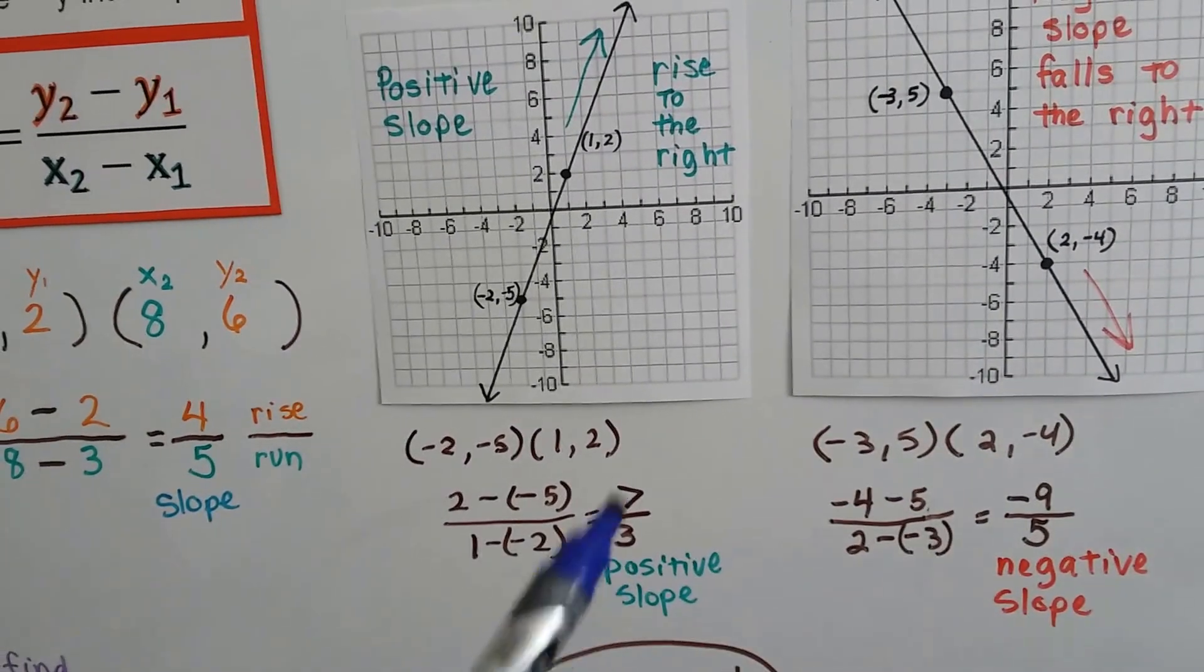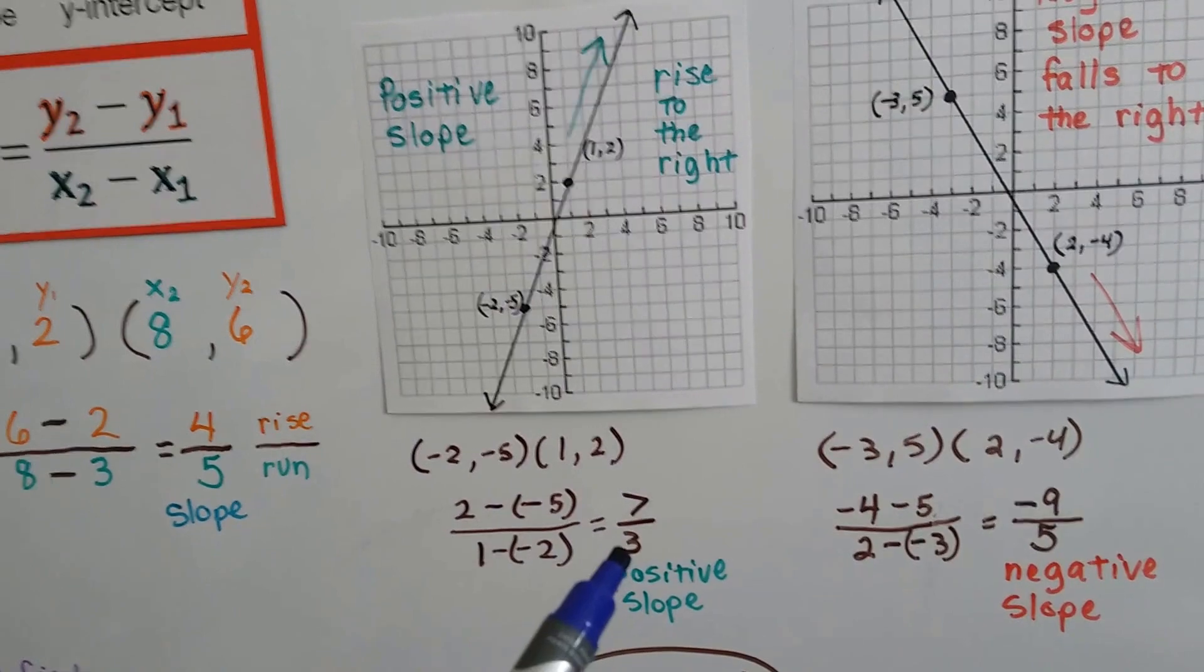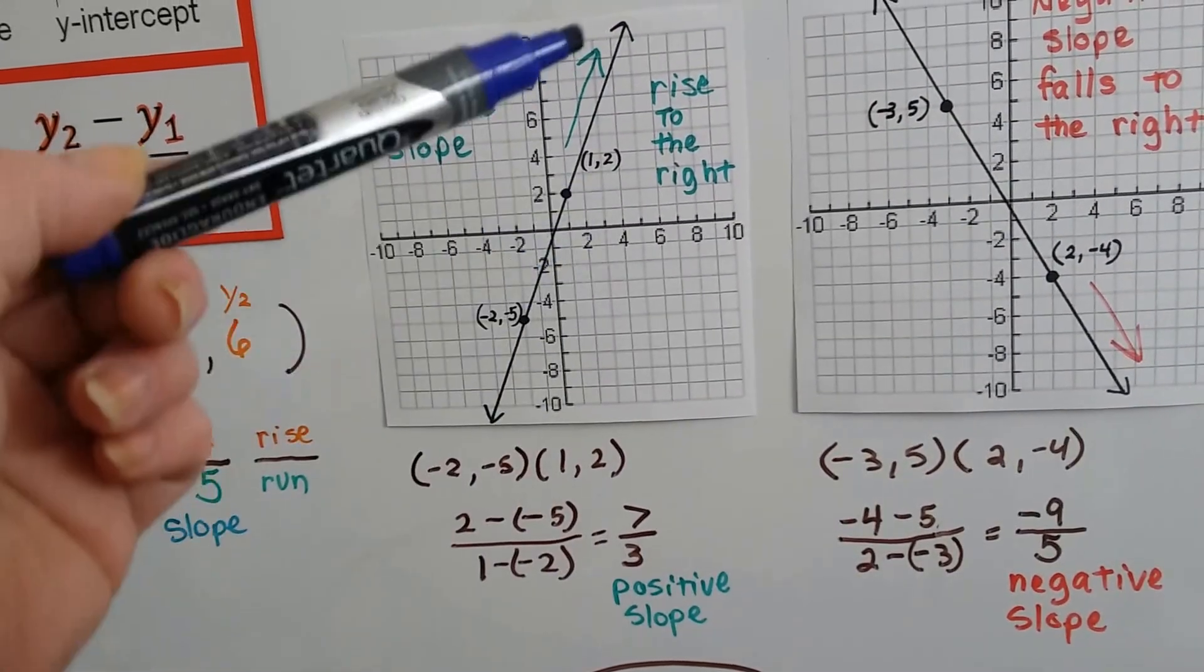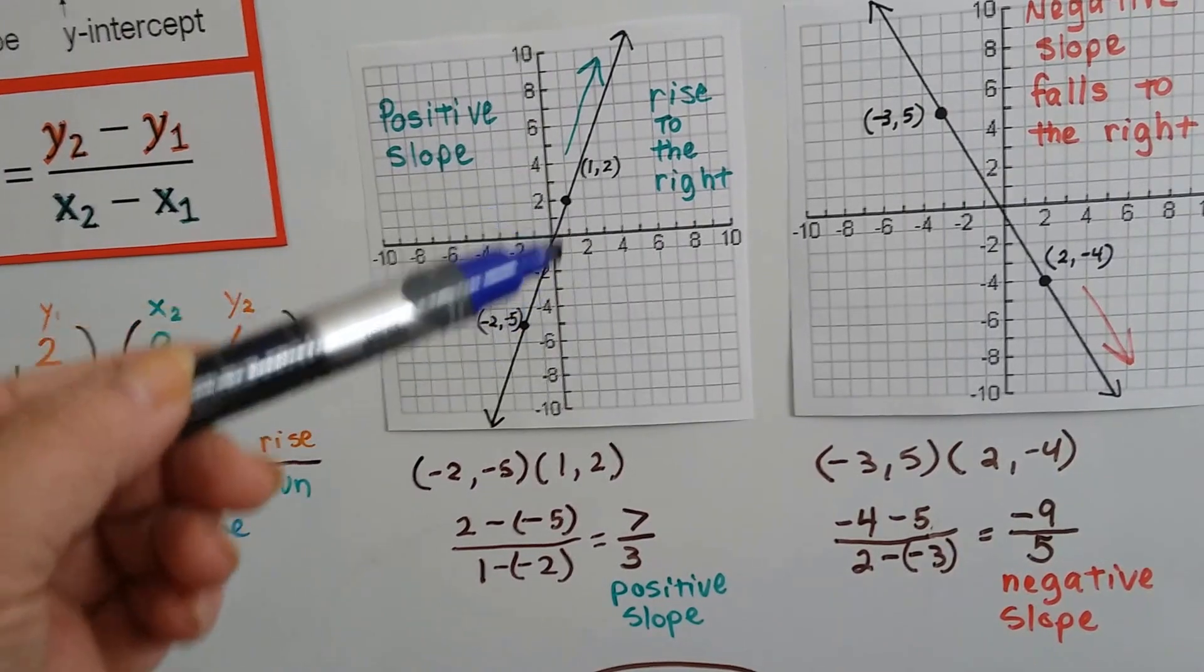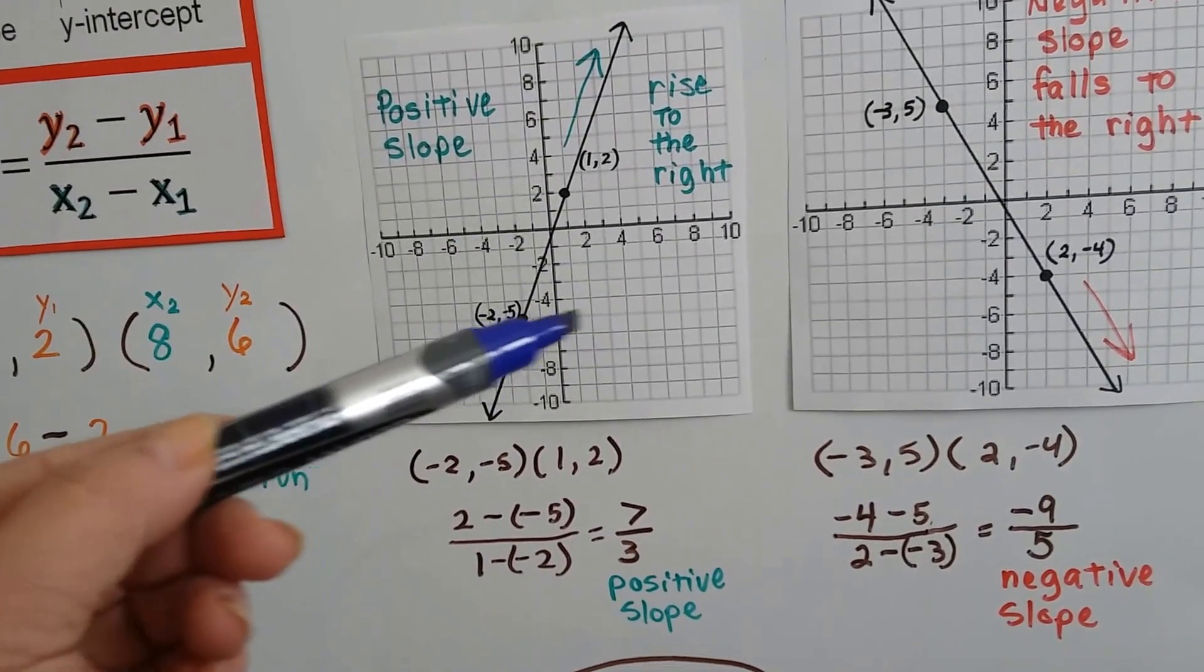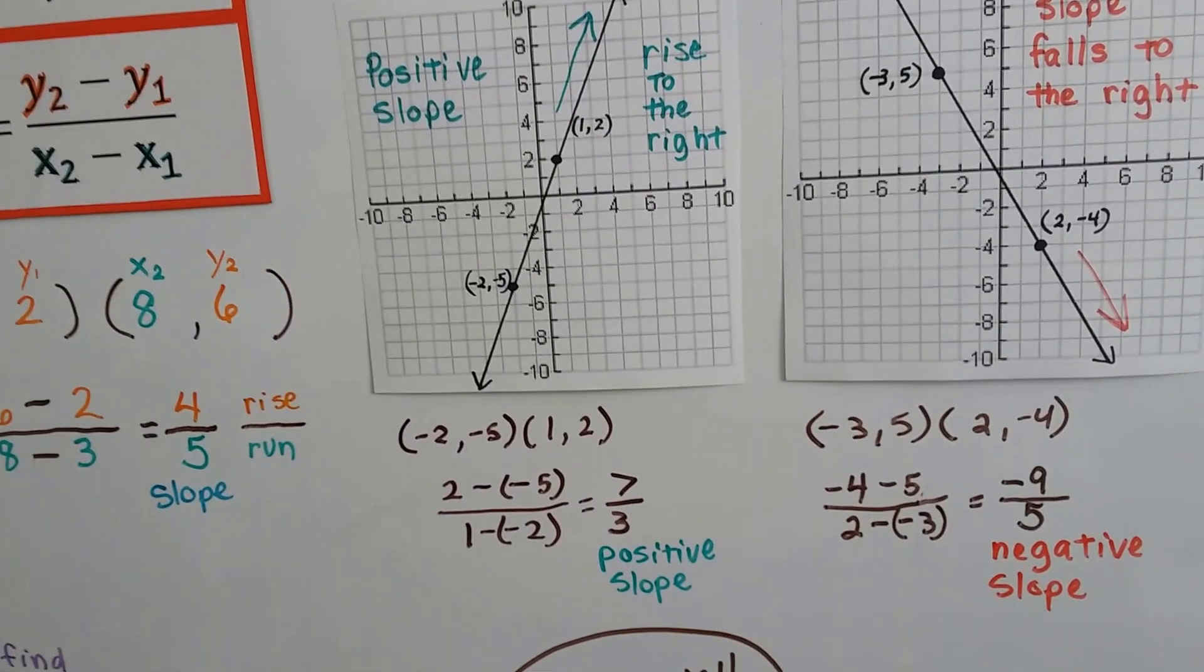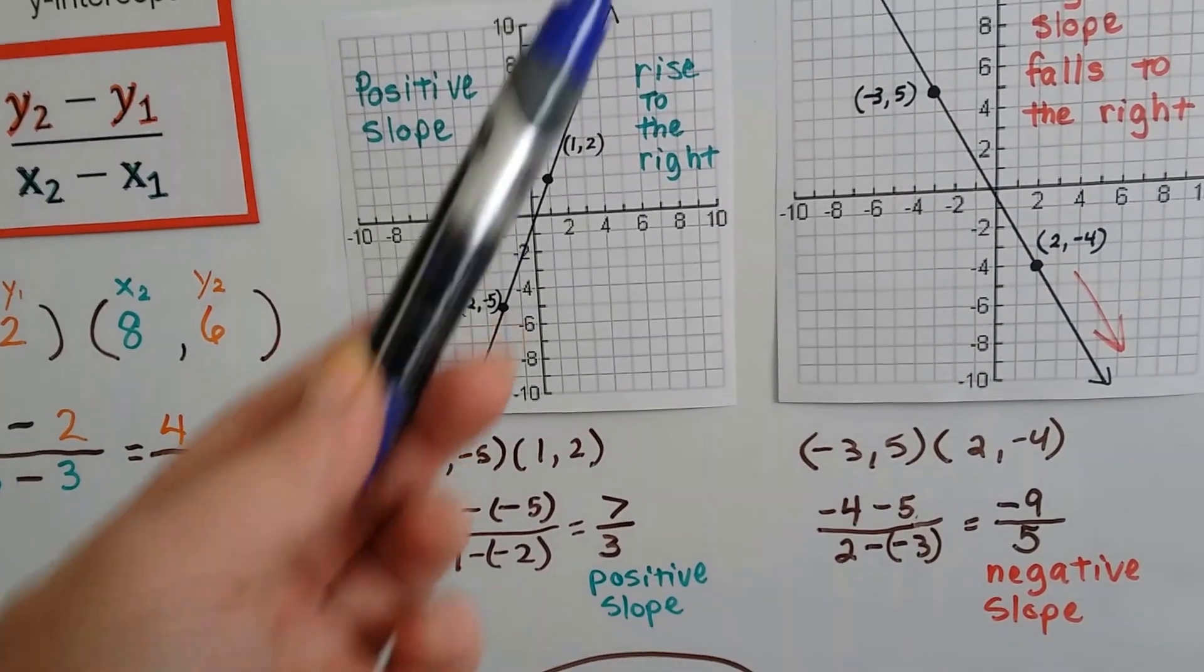Now we don't simplify this. This is our slope. We want it to be 7 over 3, because that tells us our rise is a 7 and our run is a 3. We want to know that there's 7 going up and 3 going across. So don't simplify that. But it came out as a positive number, didn't it?